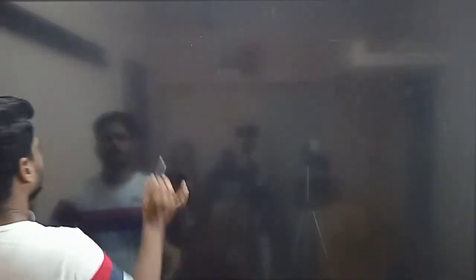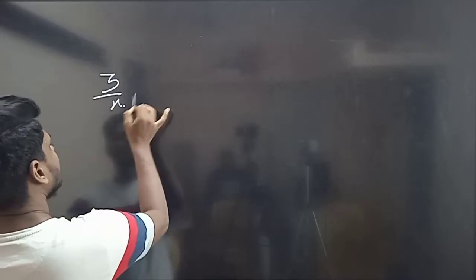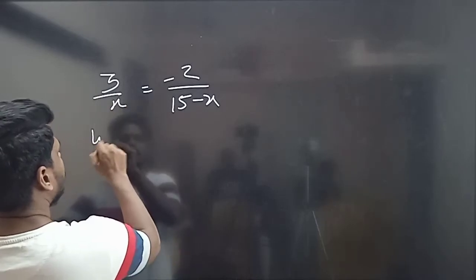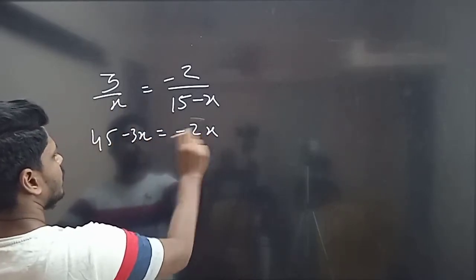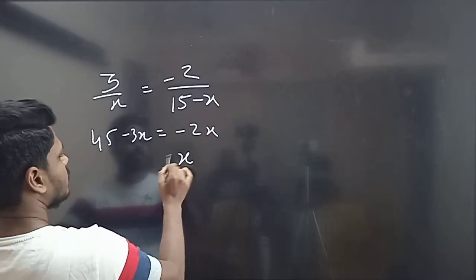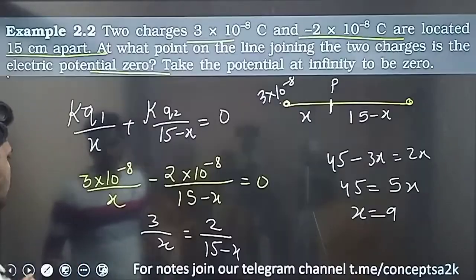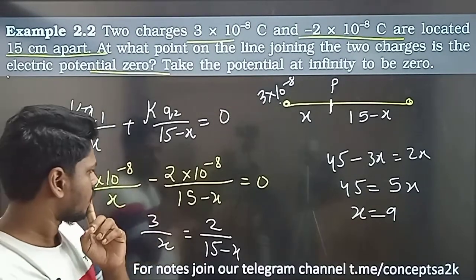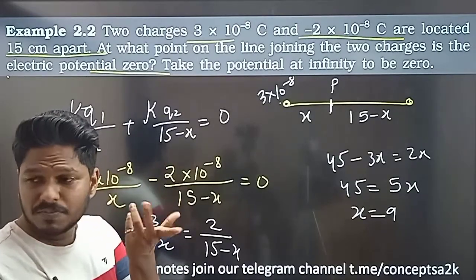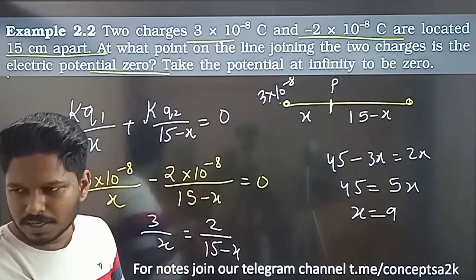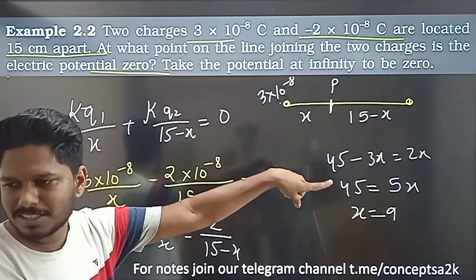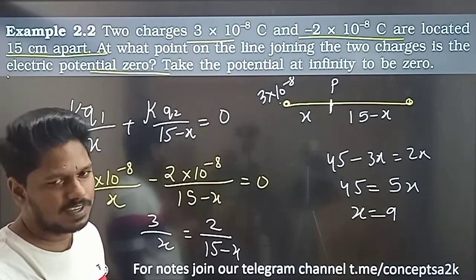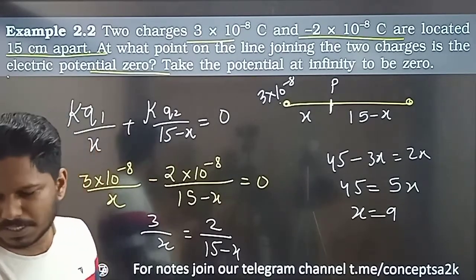If we place the point outside, we write minus 2 divided by 15 minus x (with minus sign for the negative charge). The equation becomes 3/x = −2/(15 − x). Cross multiplying gives 45 minus 3x equals minus 2x, so x equals 45 cm — this is the external point.